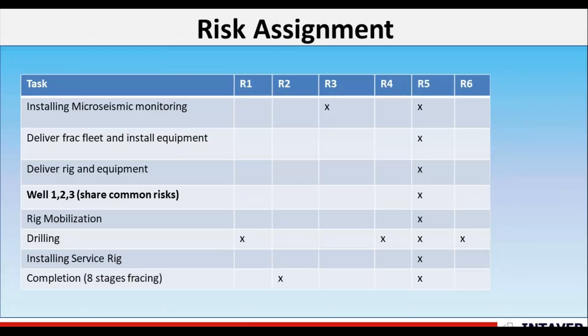A risk assignment could look something like this. We have several activities that we've identified as being affected by these risks, and we have risks numbered one to six. This gives a nice visualization about how we're going to assign these risks to the schedule and project plan. Some activities have multiple risks, and conversely a risk can be assigned to multiple activities. Risk number five is a weather risk and will be assigned as a global risk to all of the activities.